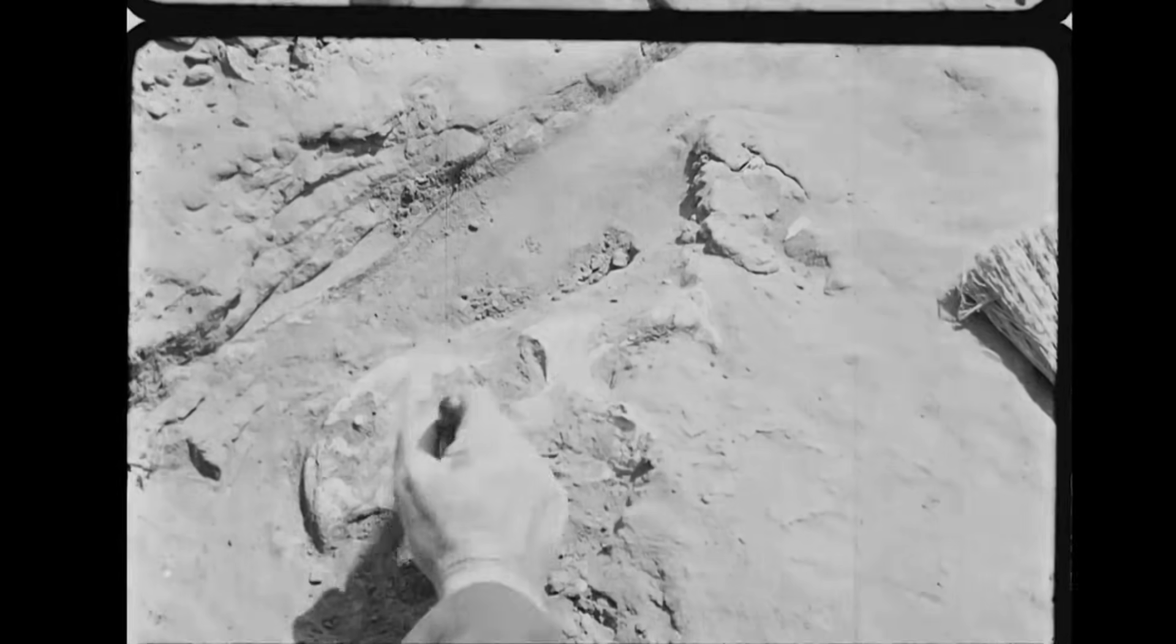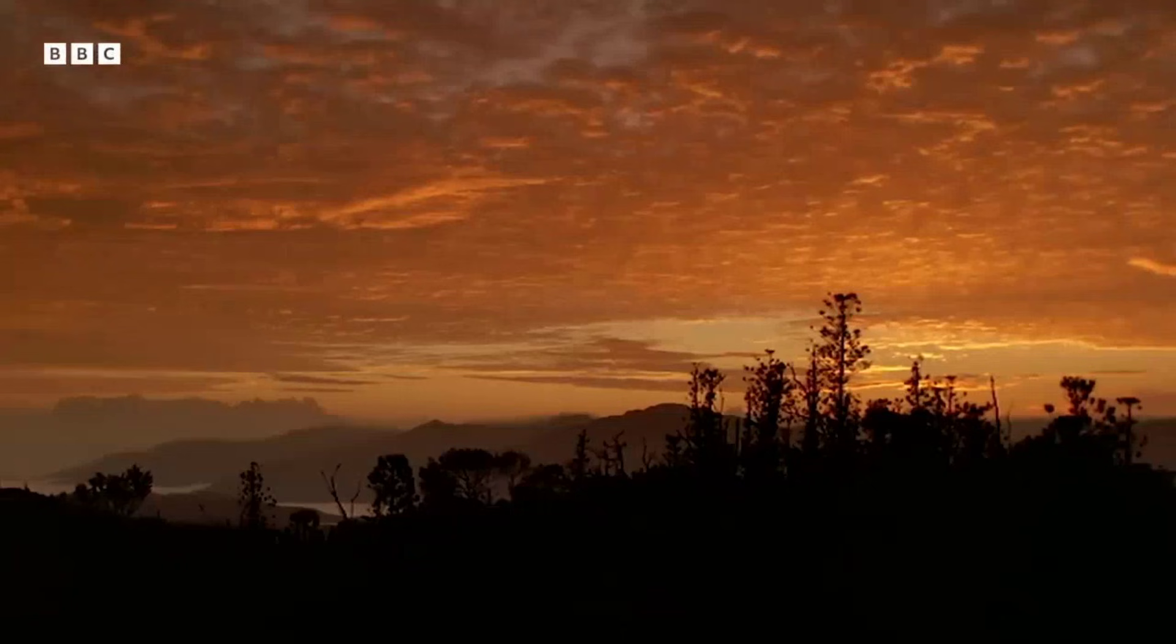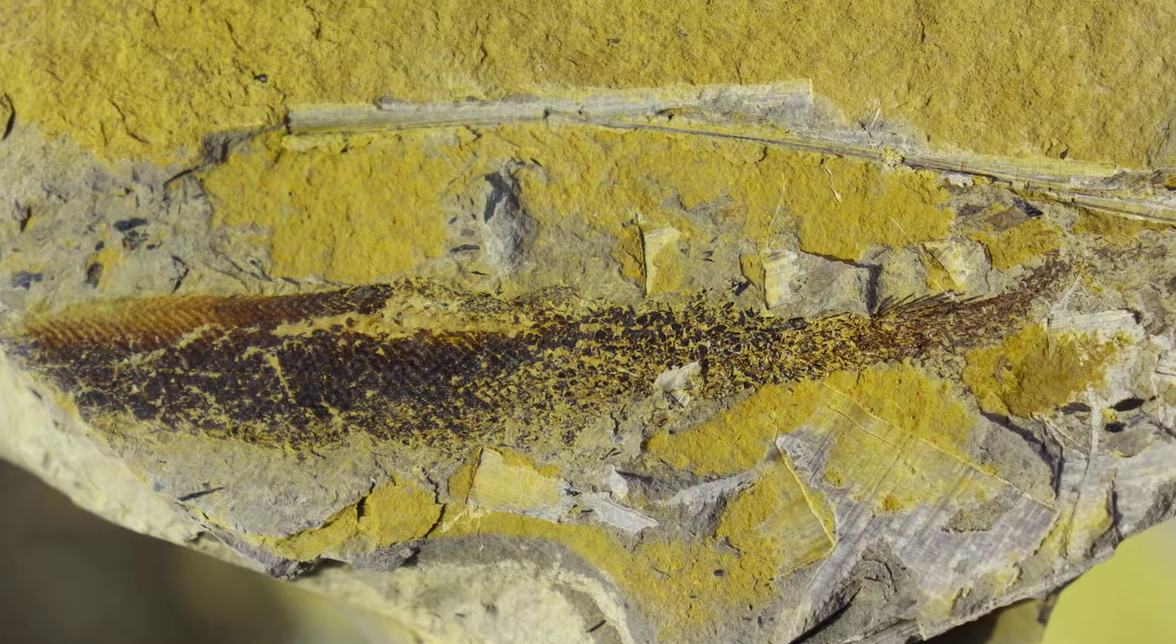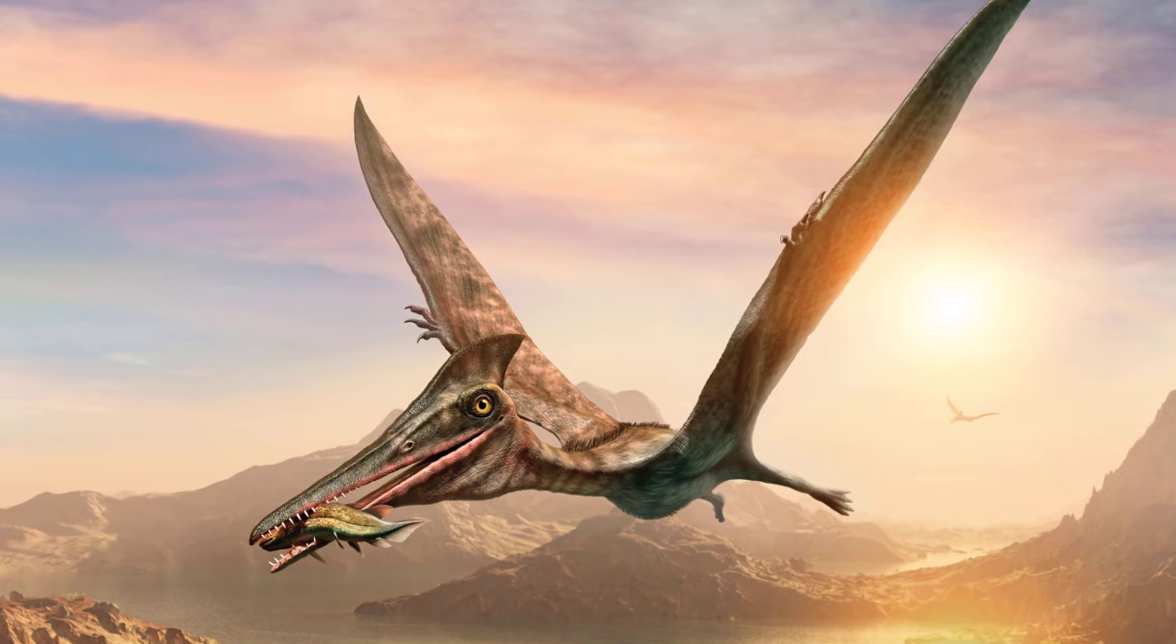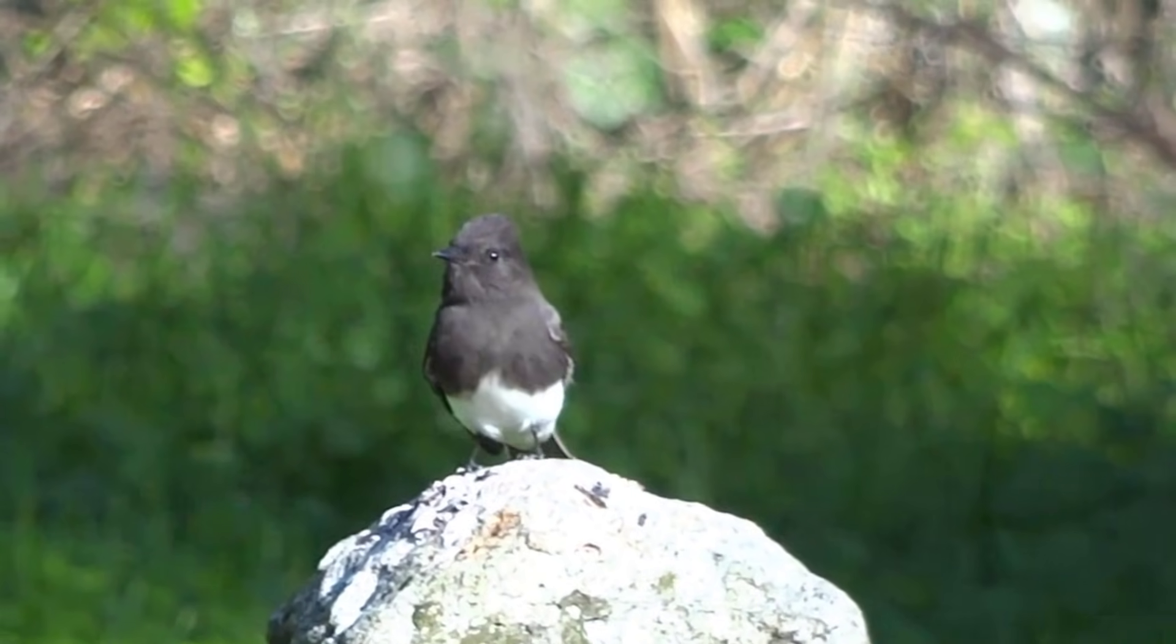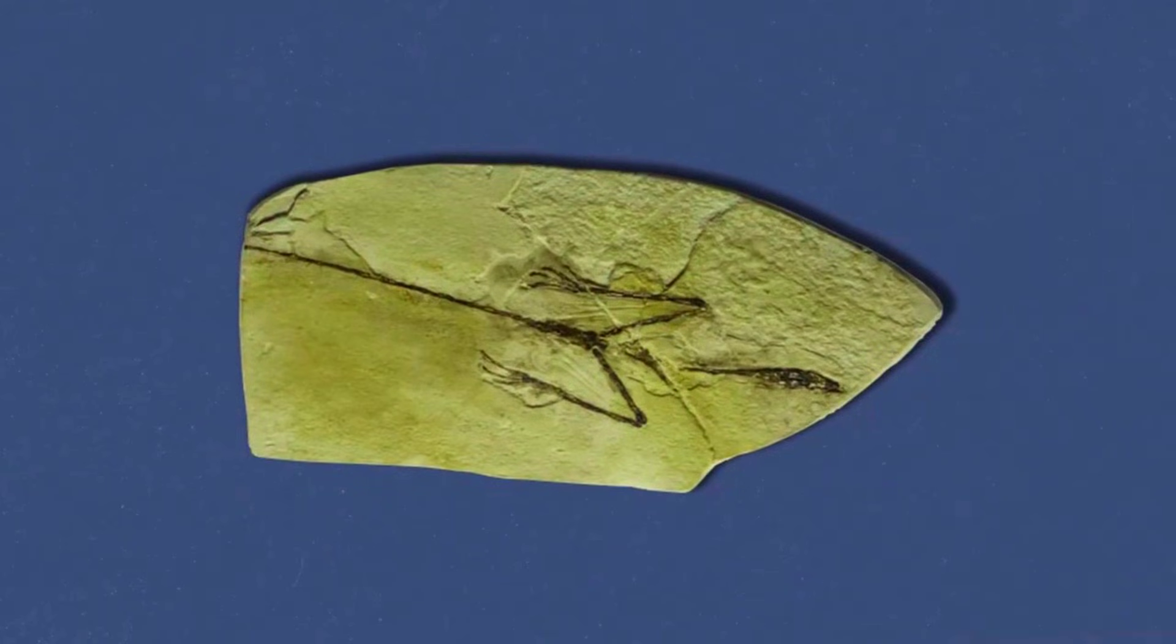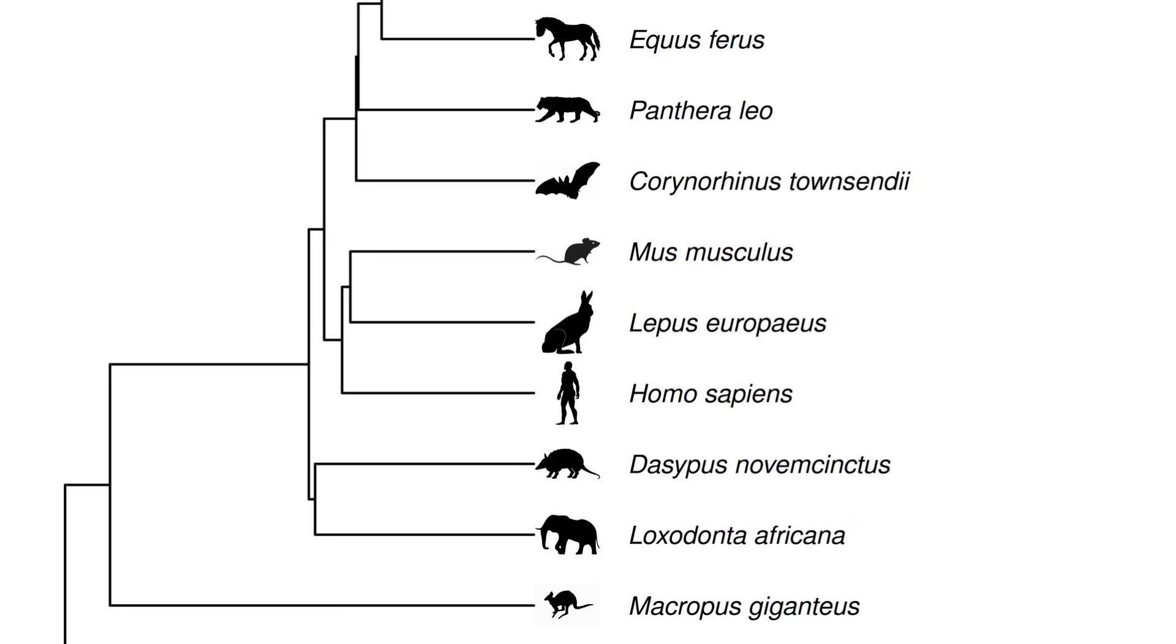The really unsettling part is what did not happen next. After Sharovipteryx, no other reptile tried this design. No leg-wing gliders in the late Triassic, none in the Jurassic, none in the Cretaceous. Nothing. Evolution looked at Sharovipteryx and concluded delta-wing leg gliders were a dead end. Every flying animal since then has used arm wings: pterosaurs, birds, bats, even modern gliding mammals. All of them use their forelimbs because arms are where the power is, arms are where the control surfaces belong, arms are what let you steer, adjust, and land safely. Legs are for landing, not for flying. Sharovipteryx got it backwards, and the fossil record shows exactly what happened when nature made that mistake. One fossil, one specimen, one attempt. And then, evolution moved on.